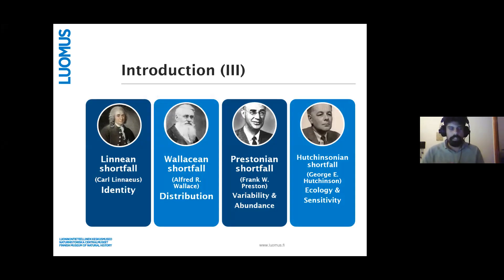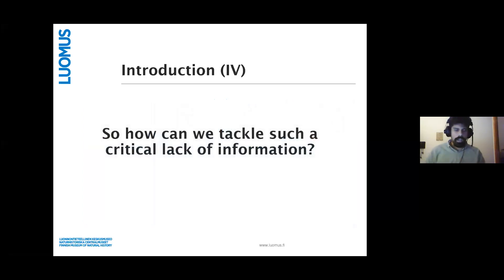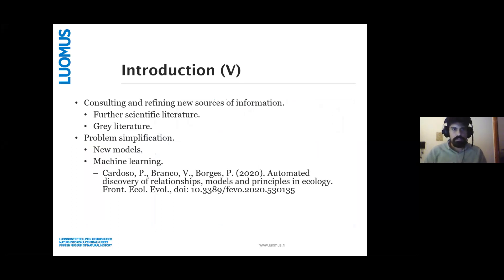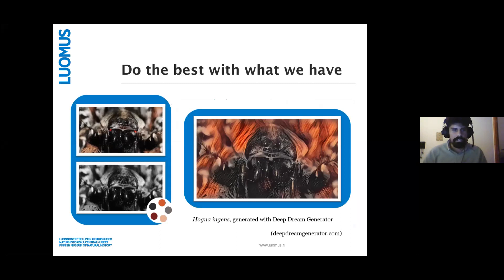Lack of information can mean lack of information about species identity, their distribution, their variability and abundance, and their ecology and sensitivity — this is fairly well known. So what I'd like to ask is how we can tackle such a critical lack of information. I'd suggest we could consult and refine new sources of information — scientific literature not yet available to us, gray literature, or we can try to simplify our research problems through the use of new models and machine learning. Overall, the big idea is to do the best with what we have.